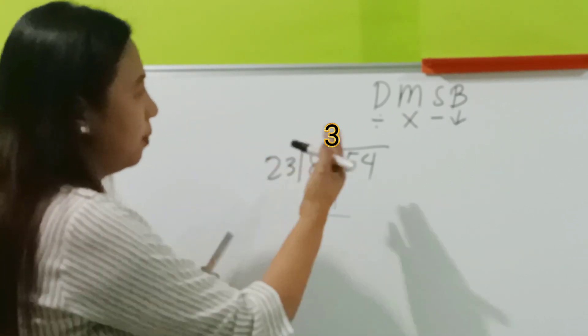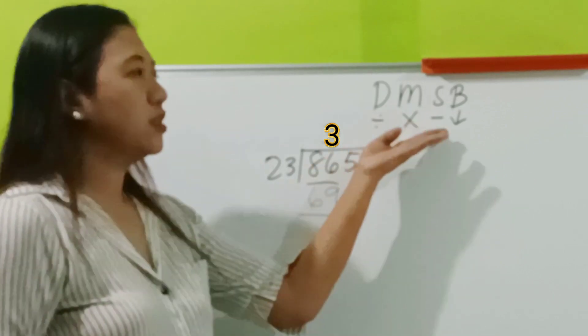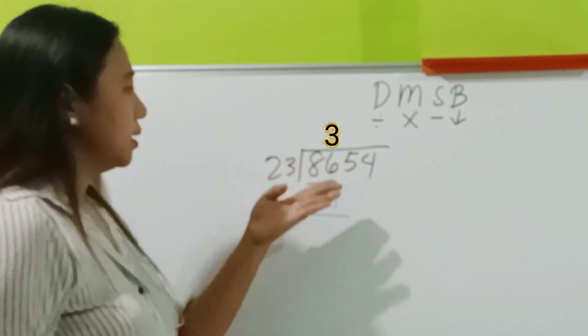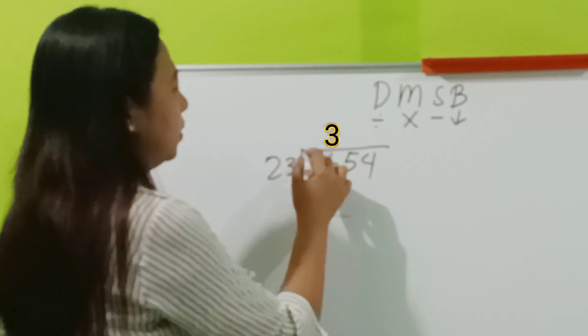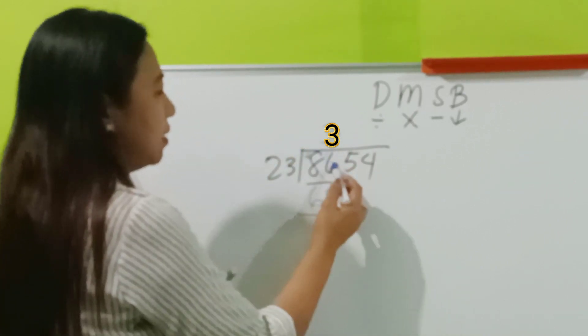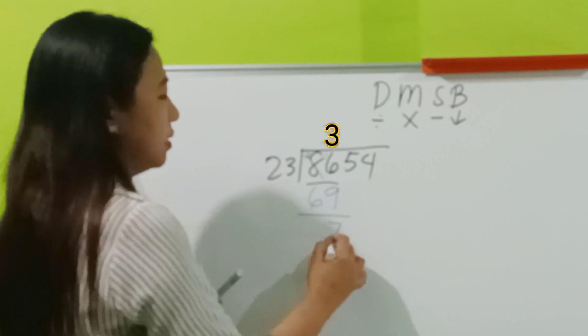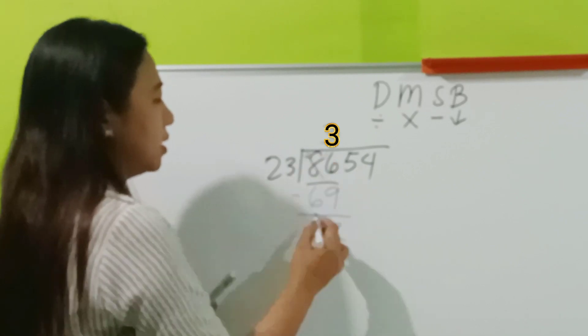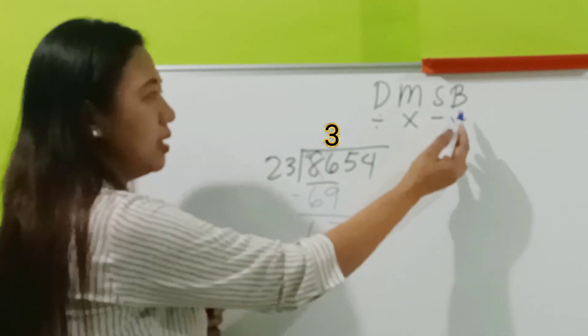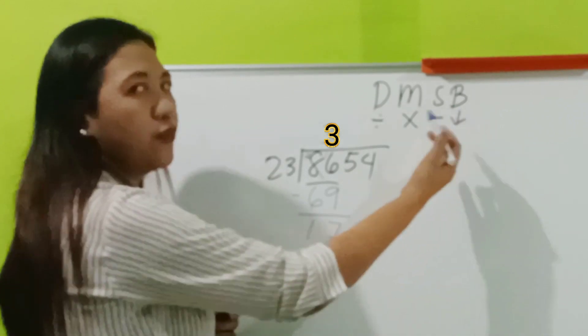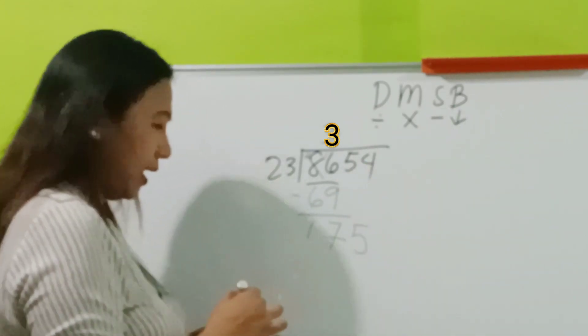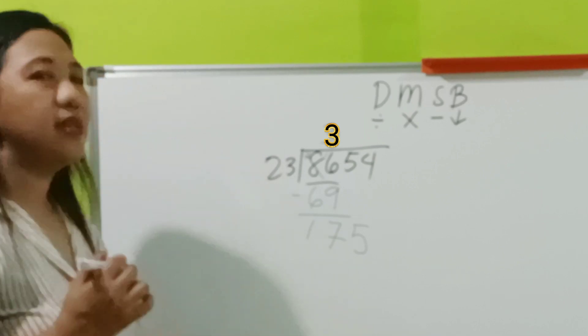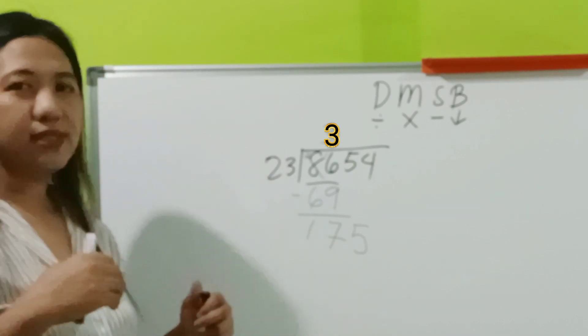So, after multiplying, we have to subtract. 69, we have to borrow. So, 16 minus 9 is 7. 7 minus 6 is 1. And then, after subtracting, we have to bring down. Bring down 5. Again, we apply the cover, cover system.